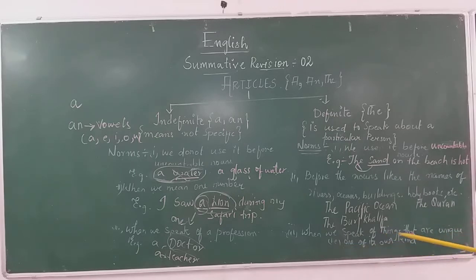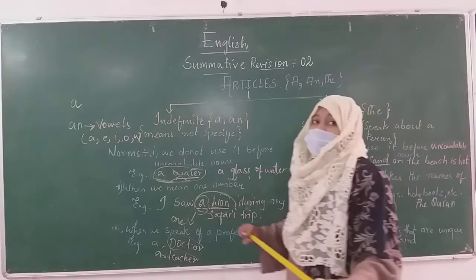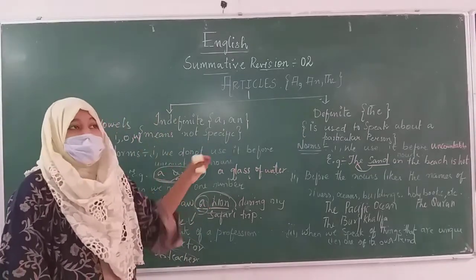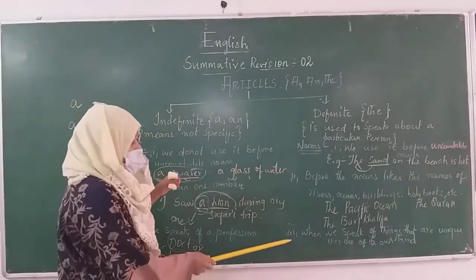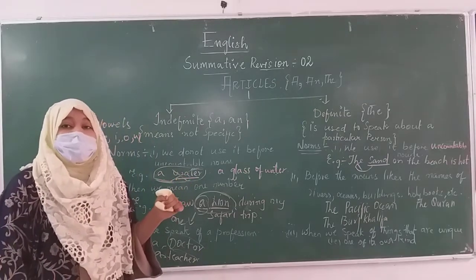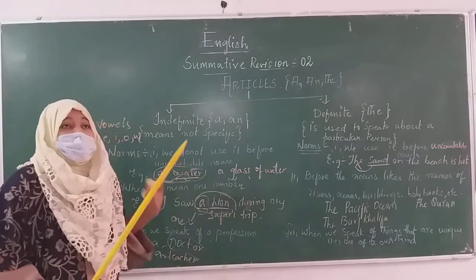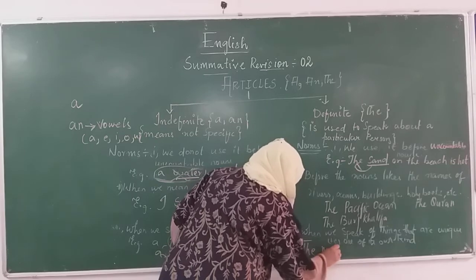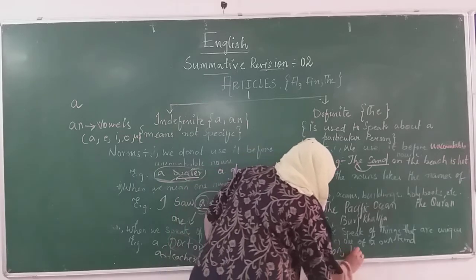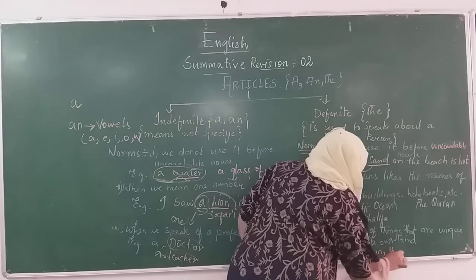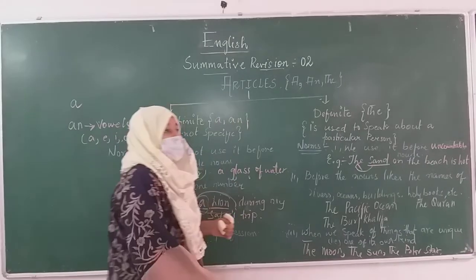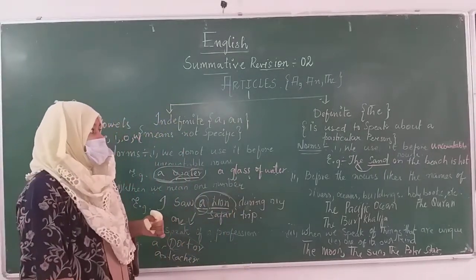When we speak of things that are unique and one of their own kind, we use THE. As the definition states, it is talking about a particular person or thing. For example: the moon, the sun, the polar star. These are things that are unique and one of their own kind.